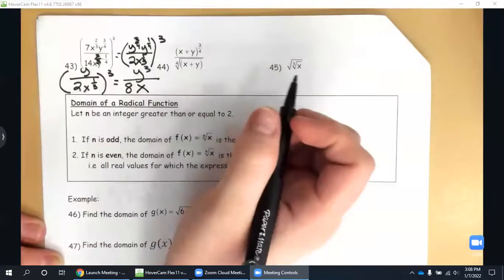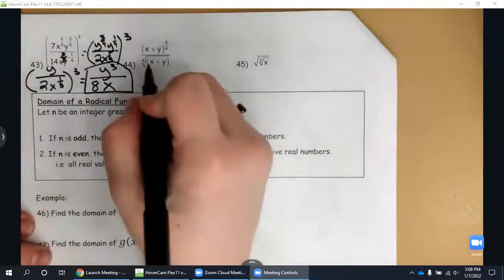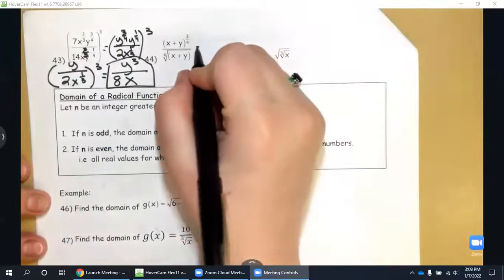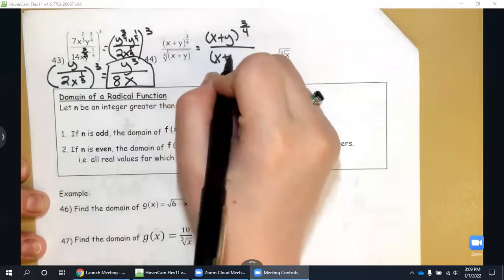44, I'm going to rewrite this term in the bottom. I've got x plus y to the three-fourths over y x plus y to the one-fourth.